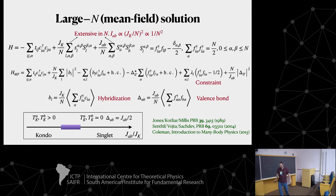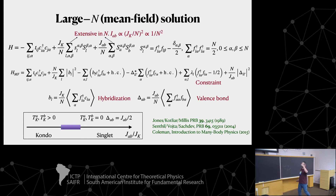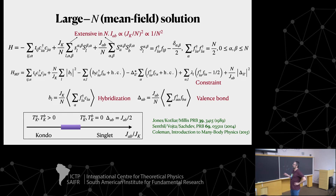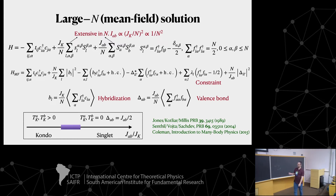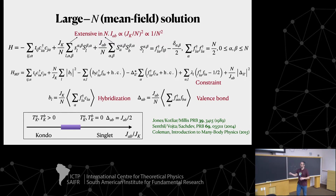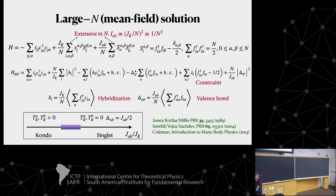This mean field theory has essentially two phases as a function of J — the direct coupling between the spins — and the Kondo coupling J_K. If J is small, we have the Kondo phase with a nonzero Kondo temperature for the two impurities. If J is large enough, the Kondo temperature goes to zero and the impurities decouple from the bath and form a singlet. There's a transition between them, though in reality it may just be a crossover. For my purposes I just focus on these two phases.